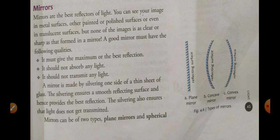Mirrors are the best reflectors of light. Someone asked me whether a wall, cardboard, or book can be a reflector. Yes, they can also be a reflector. If light strikes on any hard object, it will get reflected. But the question is how smoothly the reflection takes place. As you know, there are two kinds of reflection depending on the nature of the surfaces: that is your regular reflection and irregular reflection.